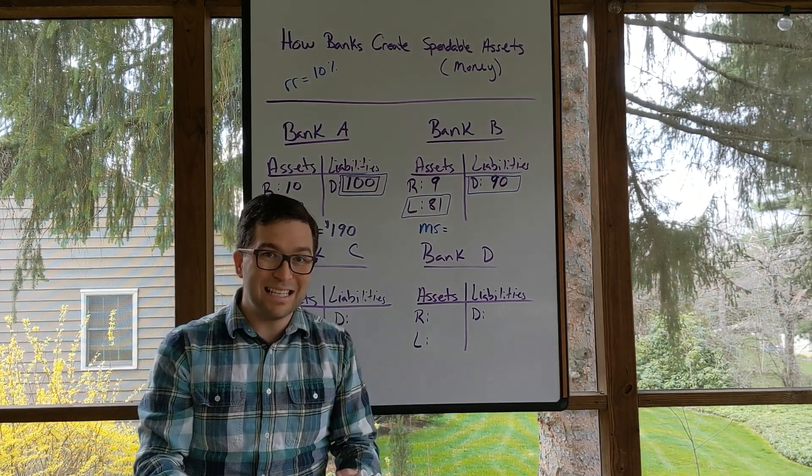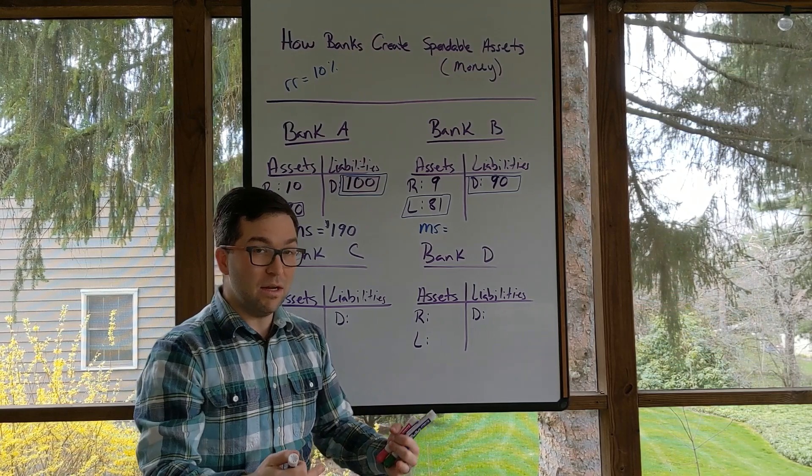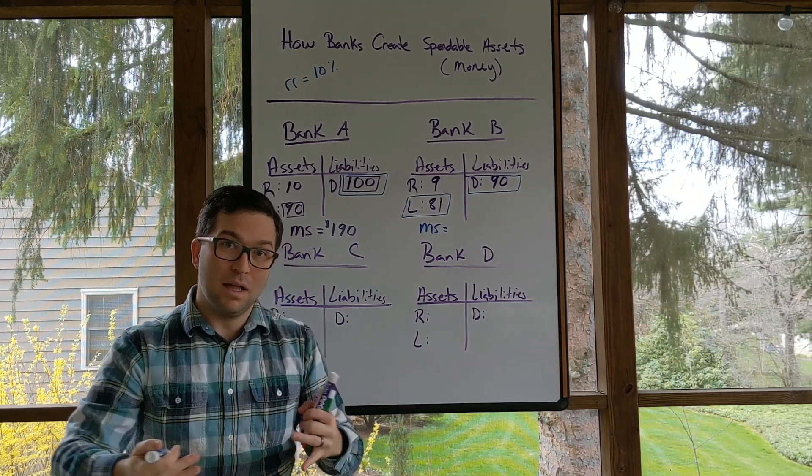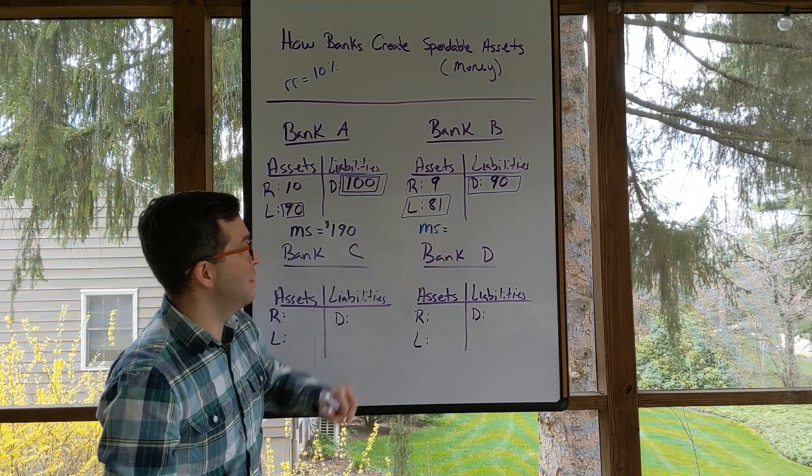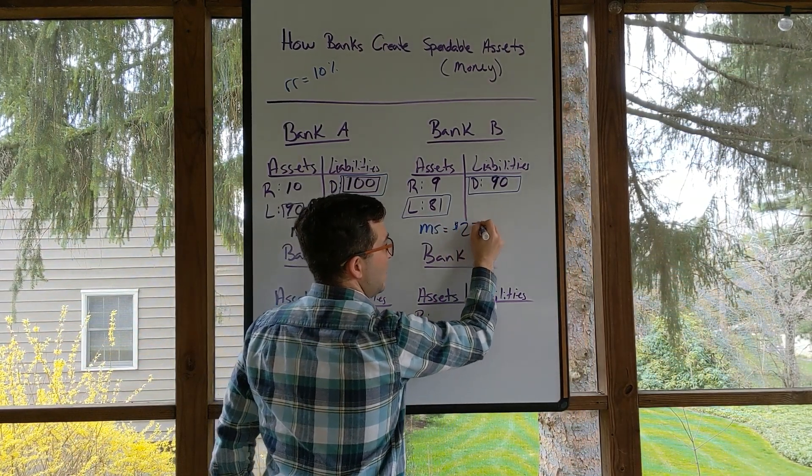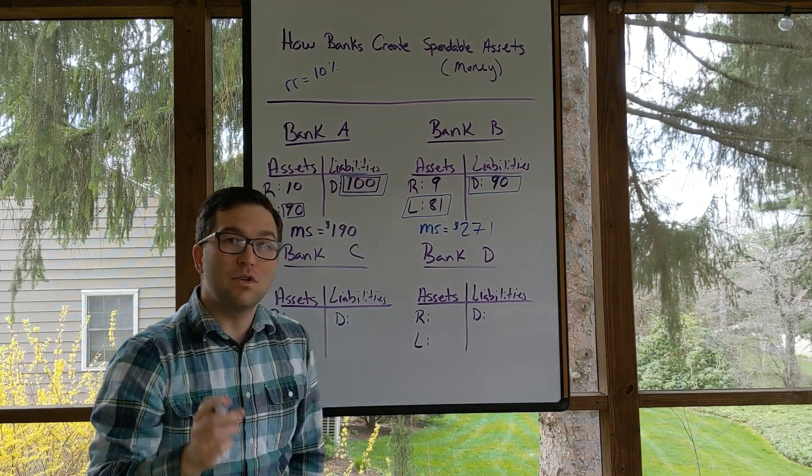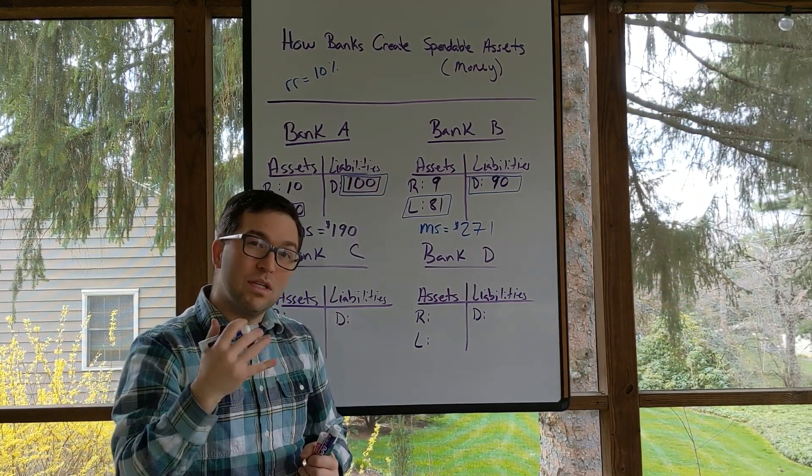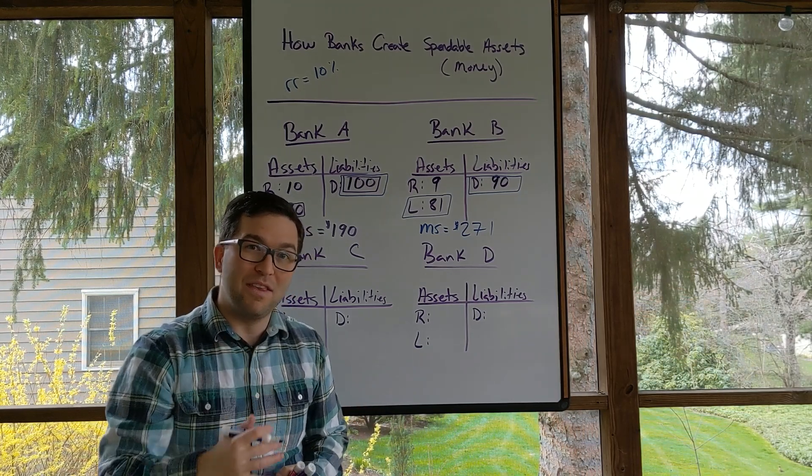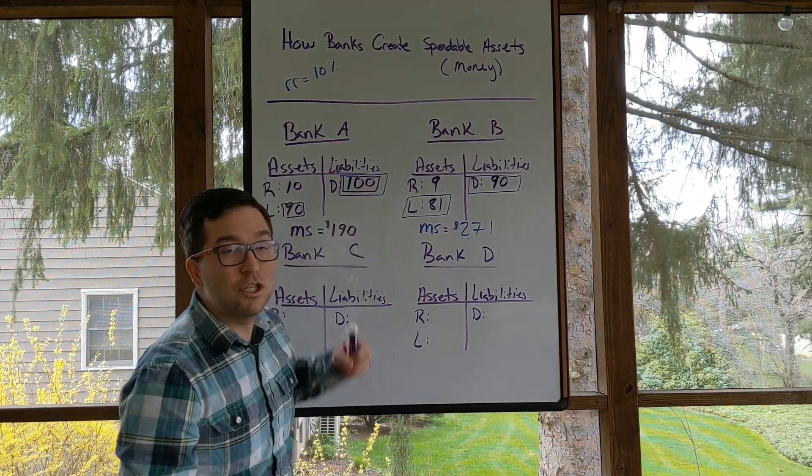So we're only looking at deposits and the currency, the spendable money, that's out in society. So in this case, we would have $190 plus $81, which is $271. That means there's $271 worth of assets that you could spend in the society right now at this given time. And that's just from an initial deposit of $100.